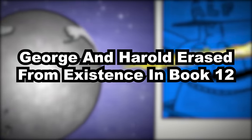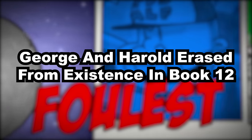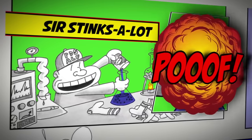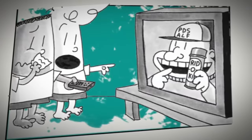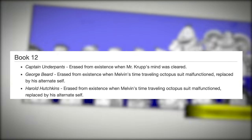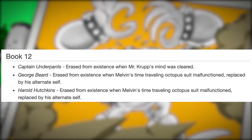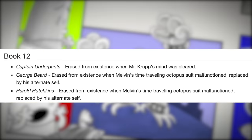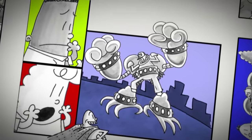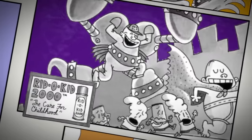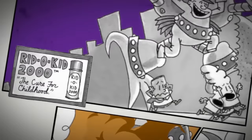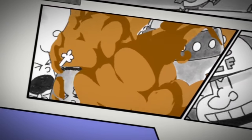George and Harold are erased from existence in Book 12. Their true deaths happened in the 12th book when Melvin's time-traveling suit malfunctioned and they were replaced by their alternative selves. Technically they did die in the final book. Many have argued that being erased from existence isn't the same as dying, but it remains debatable.